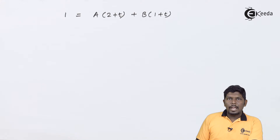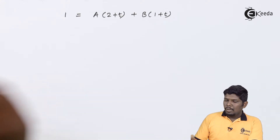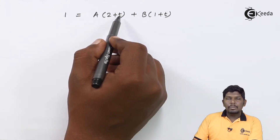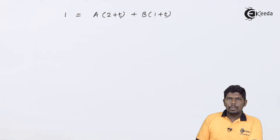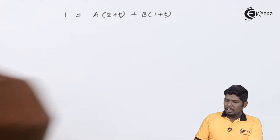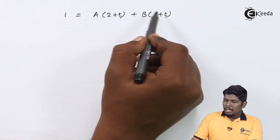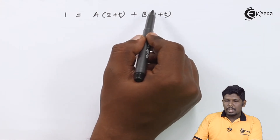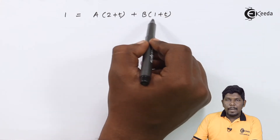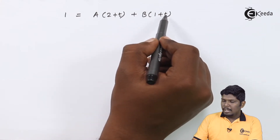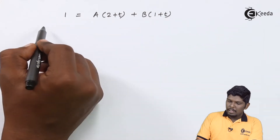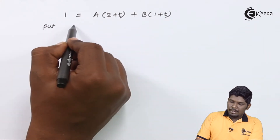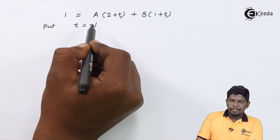This gives us 1 = A(2 + t) + B(1 + t). To find the values of A and B, we will substitute certain values of t one by one. To find A, we need to make the (1 + t) bracket zero, which happens when t = -1.